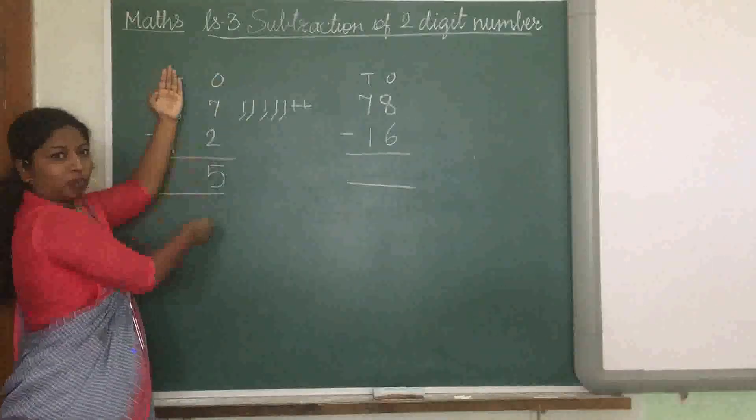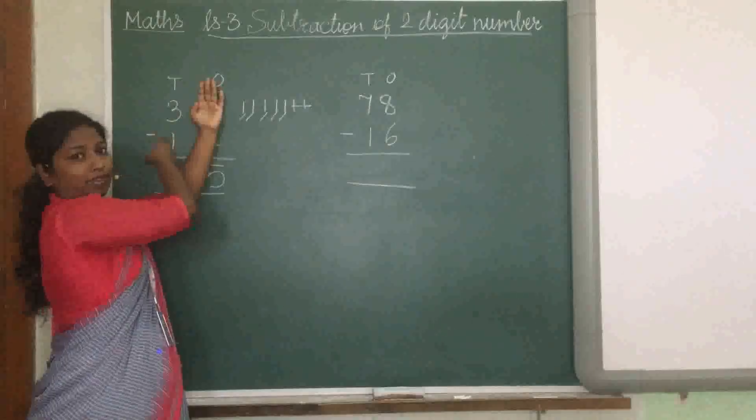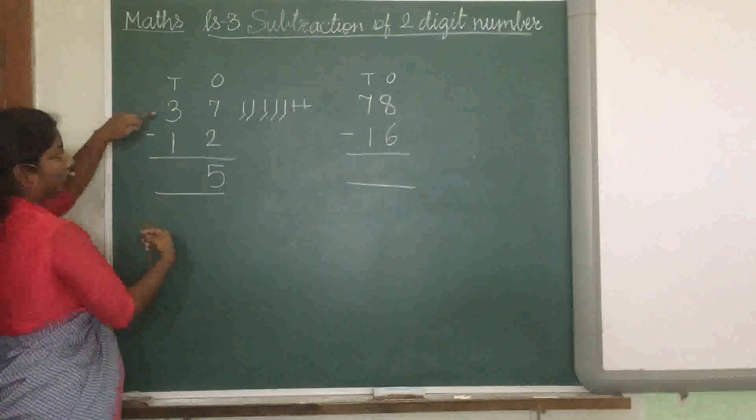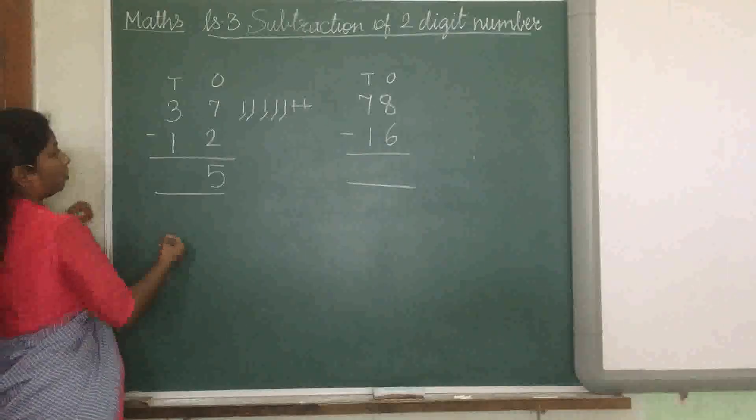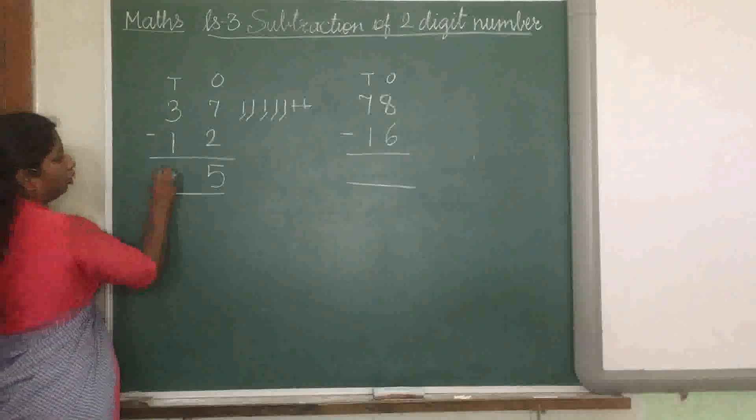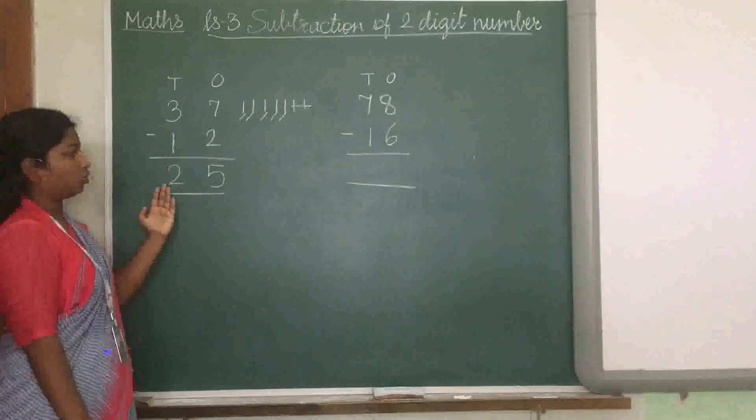So we did the ones part first. Now we are going to solve the other part, that is the tens. So on the tens part what is it? 3 and 1. So we can do 3 minus 1, which is 2. So the answer is 25.